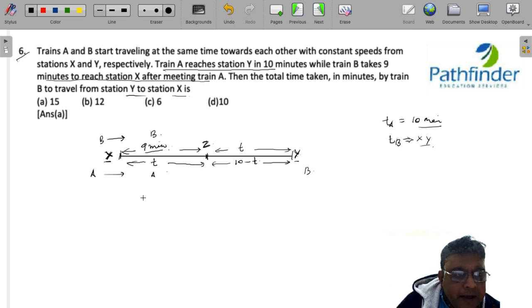What do we have? 9 upon T, this is the ratio of time required by B. If the distance is constant, for constant distance, the ratio of their times must be same. Time taken by B upon time taken by A must be same over the same distance. XZ is the same distance. Time required by B is 9, time required by A is T. ZY is also the same distance. Time required by B is T, whereas time required by A is 10 minus T.